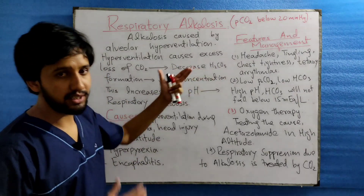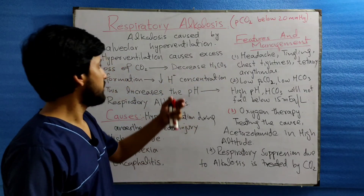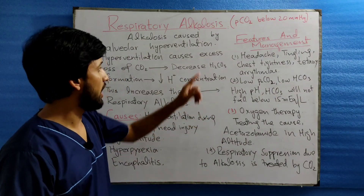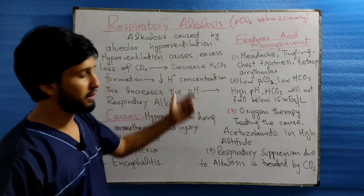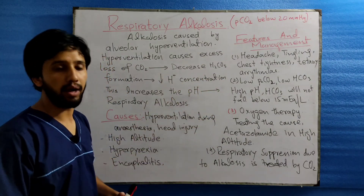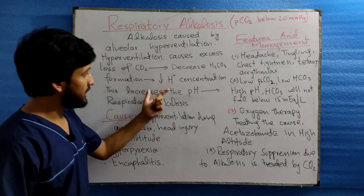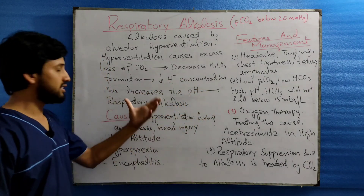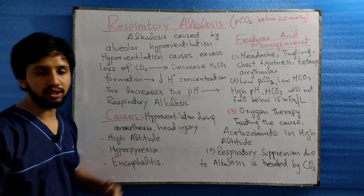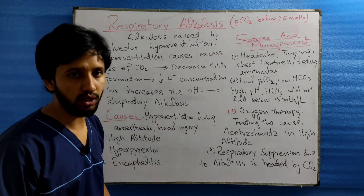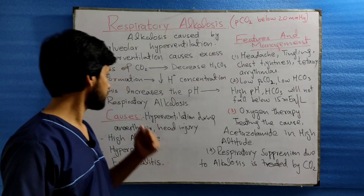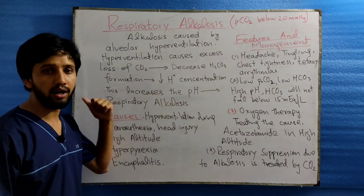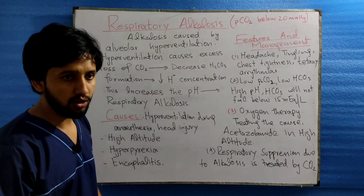Once the H2CO3 level decreases, there will be decreased breakdown of this H2CO3 into H+ ions and bicarbonate ions. Decreased H+ concentration will increase the pH — that is, an alkaline pH of the body. This process will lead the body to respiratory alkalosis.